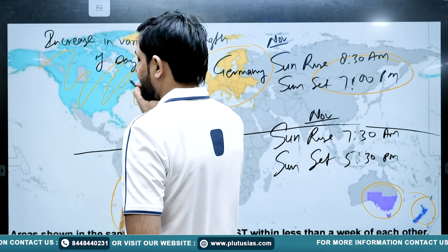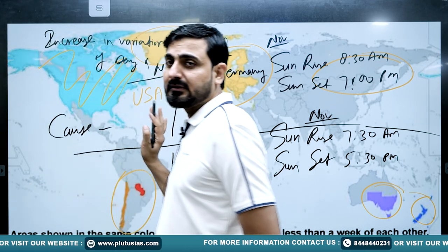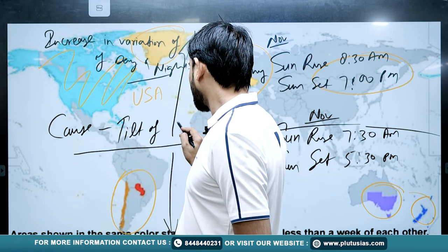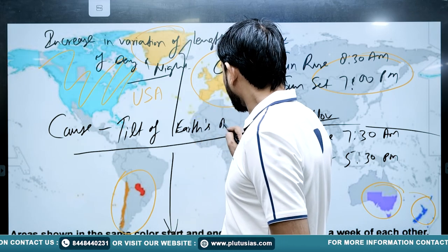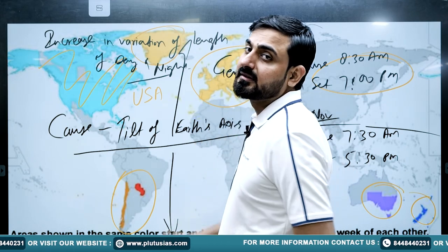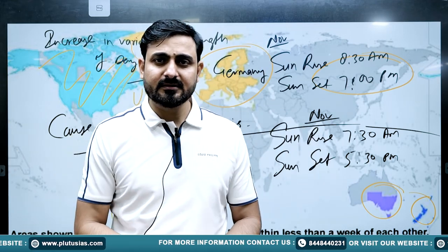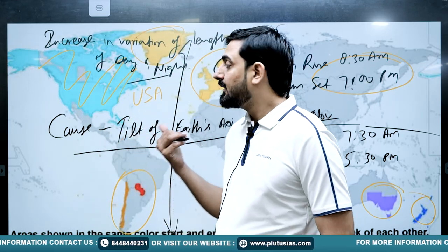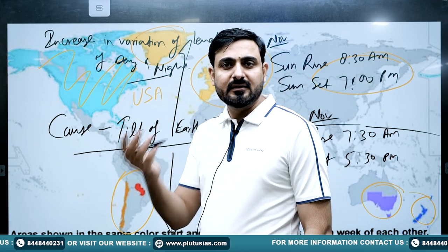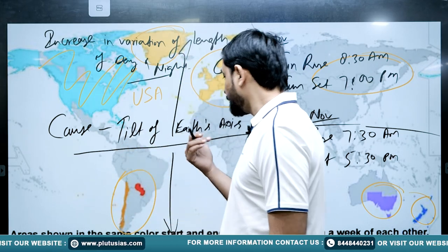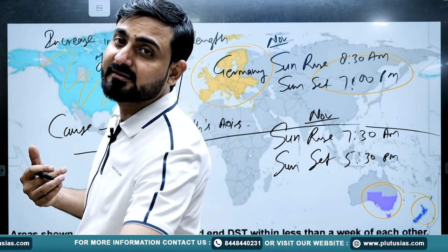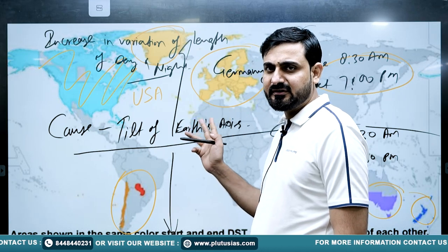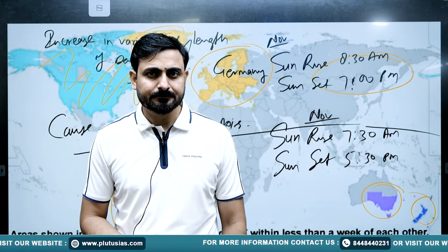The cause behind this variation is the tilt of Earth's axis. If there were no tilt, there would be no variation — all countries across the globe would experience the same 12-hour day and 12-hour night. But due to this tilt, and further due to Earth's rotation and mainly its revolution, revolution and tilt together are responsible for variation in the length of day and night.